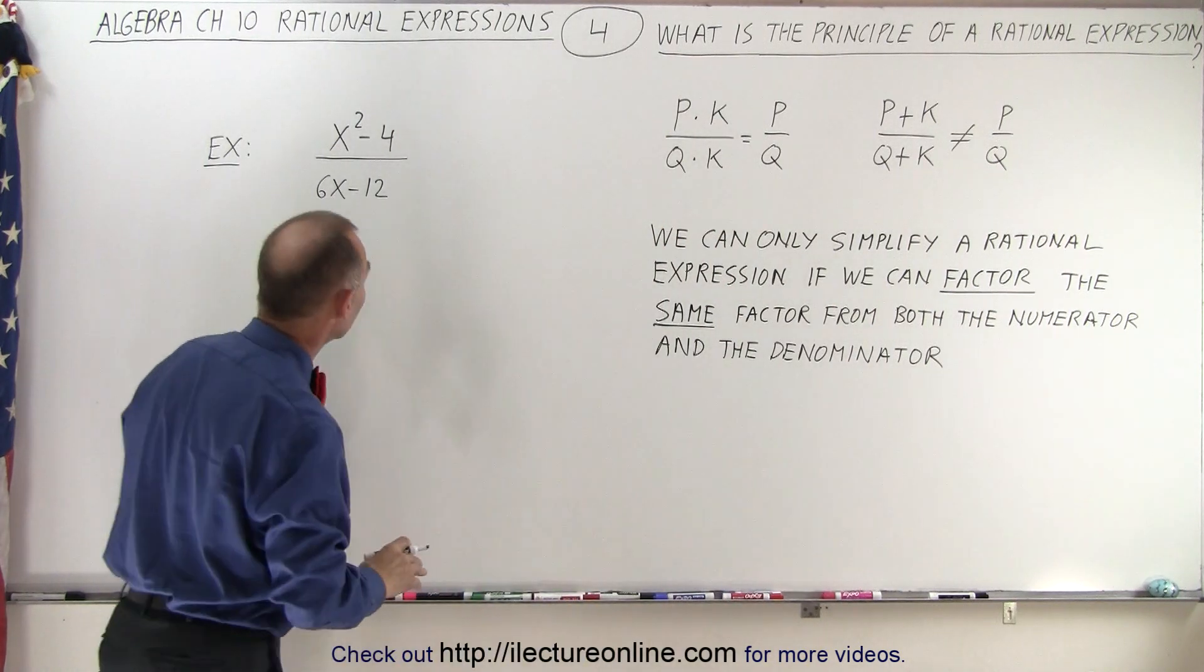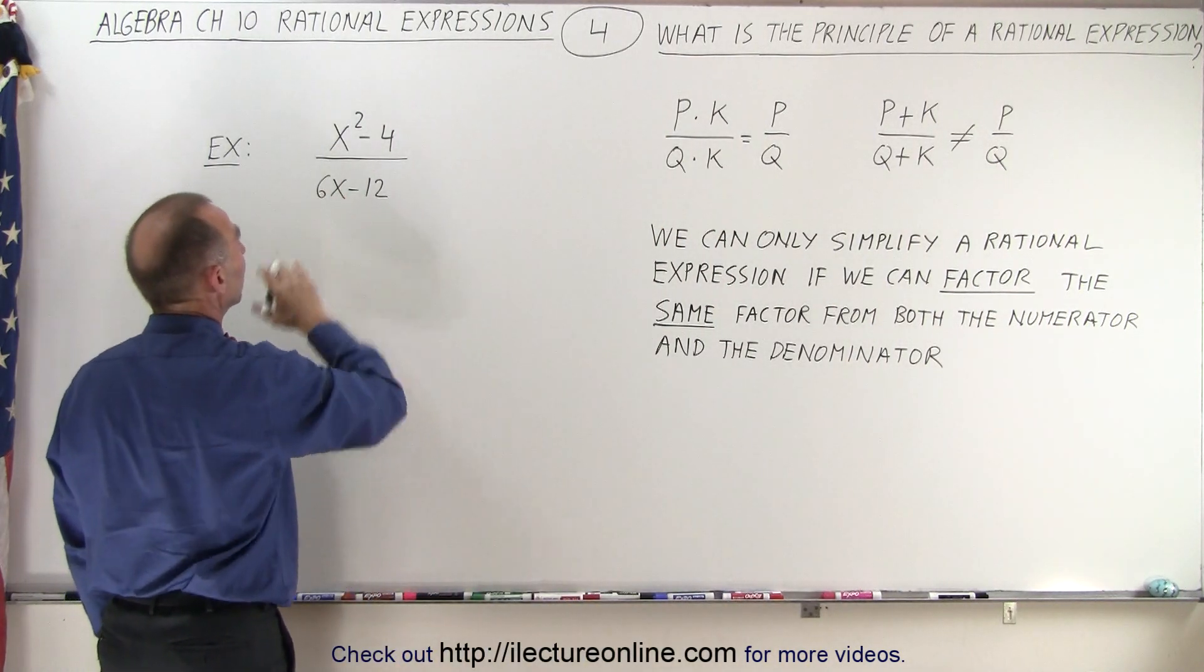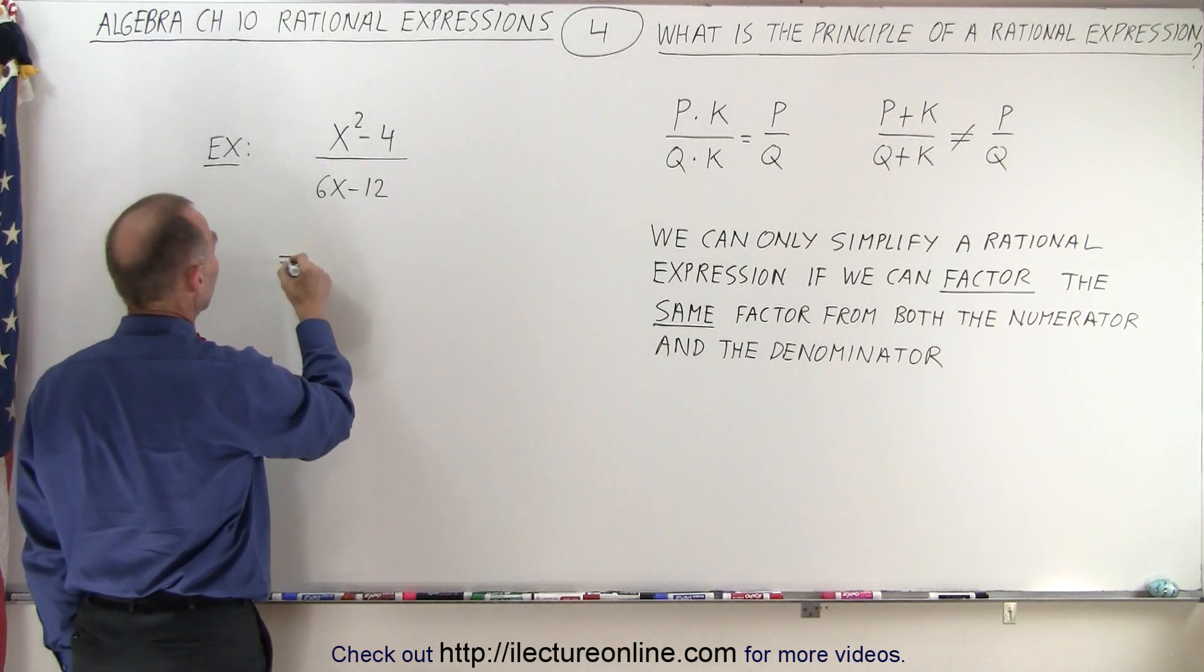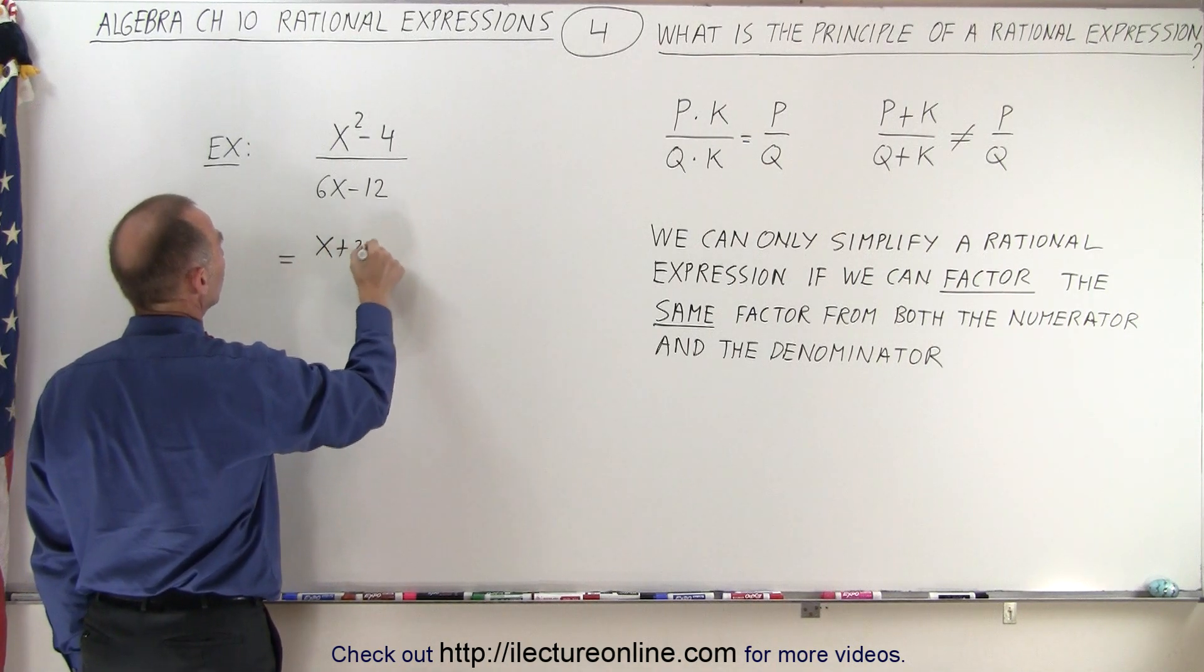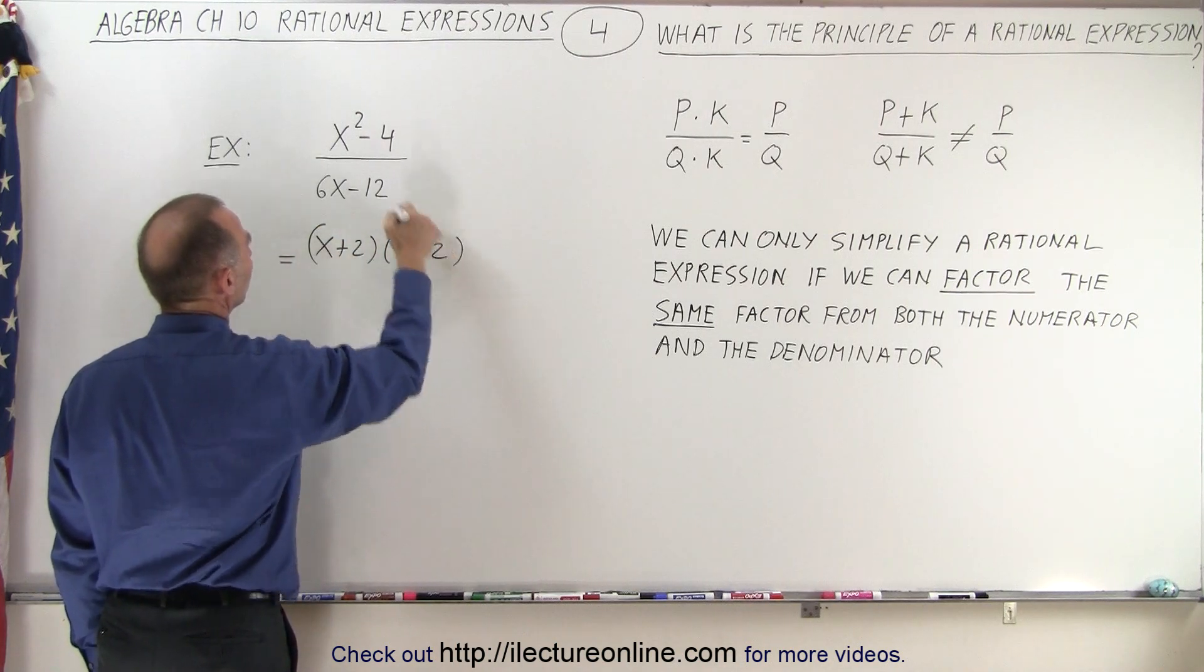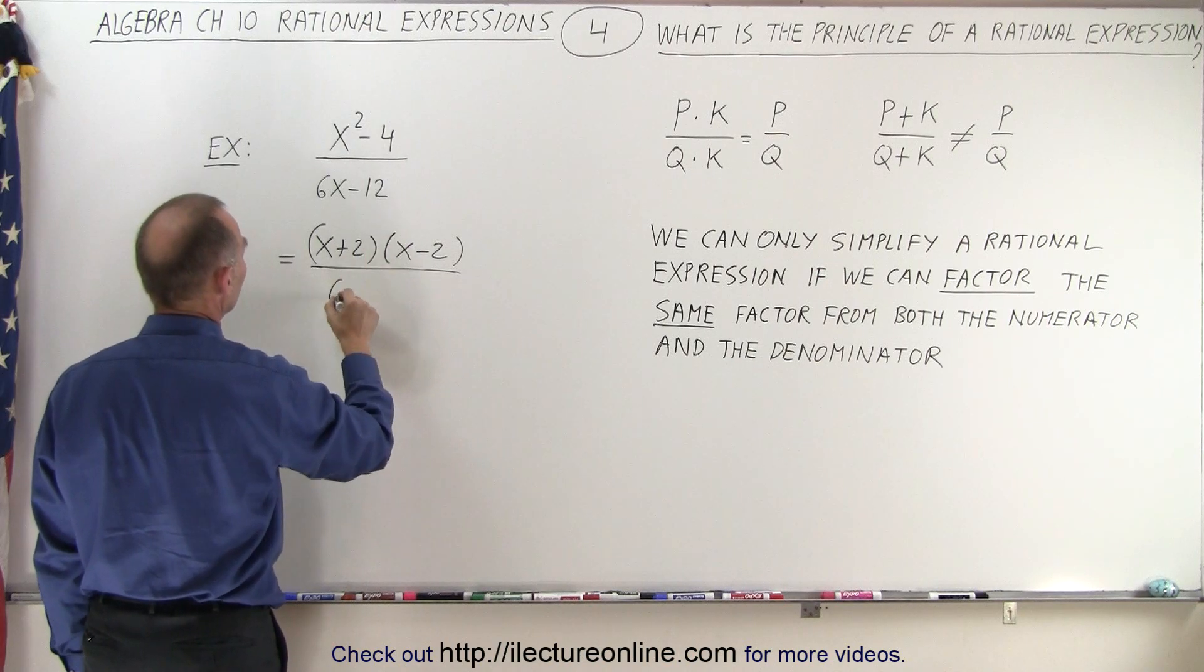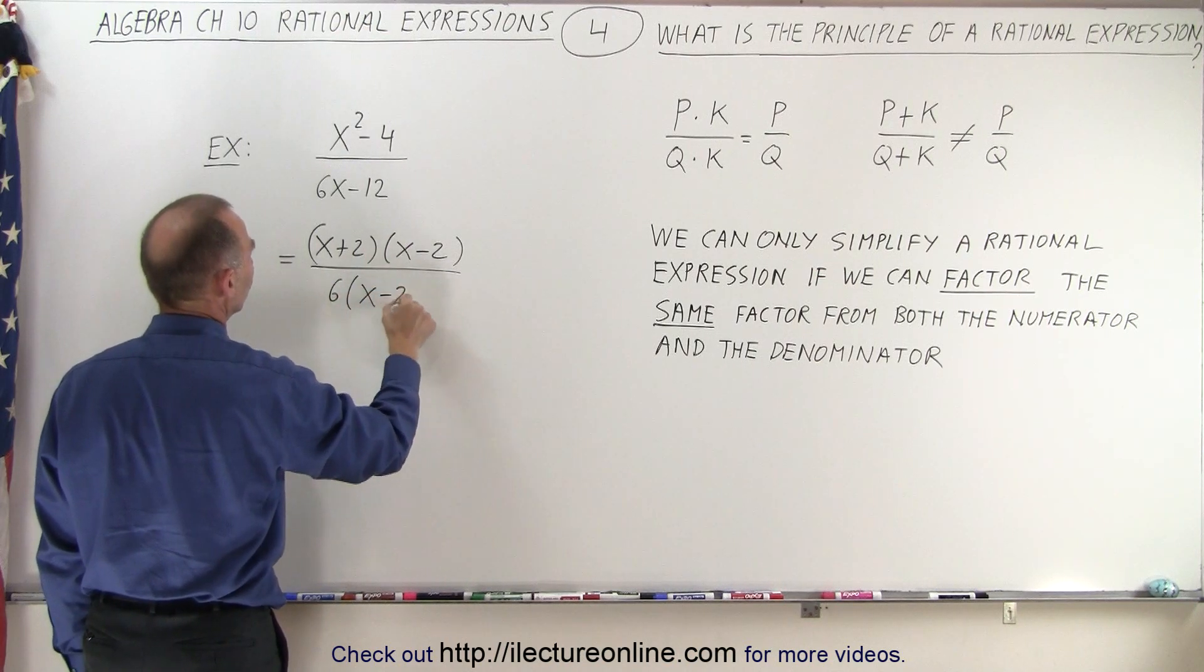Here's an example. Let's say we have x squared minus 4 over 6x minus 12. The numerator can be factored as (x plus 2) times (x minus 2) because we have the difference of squares. In the denominator we can factor out 6 and we're left with (x minus 2).